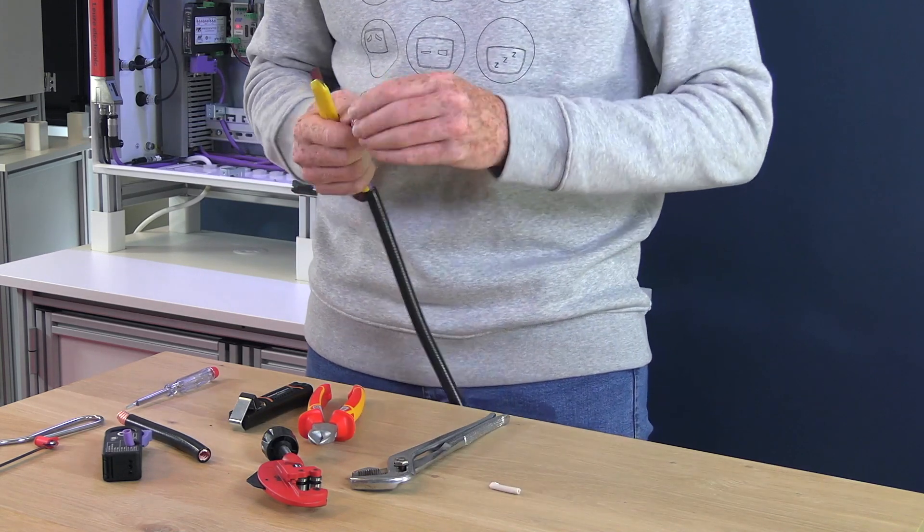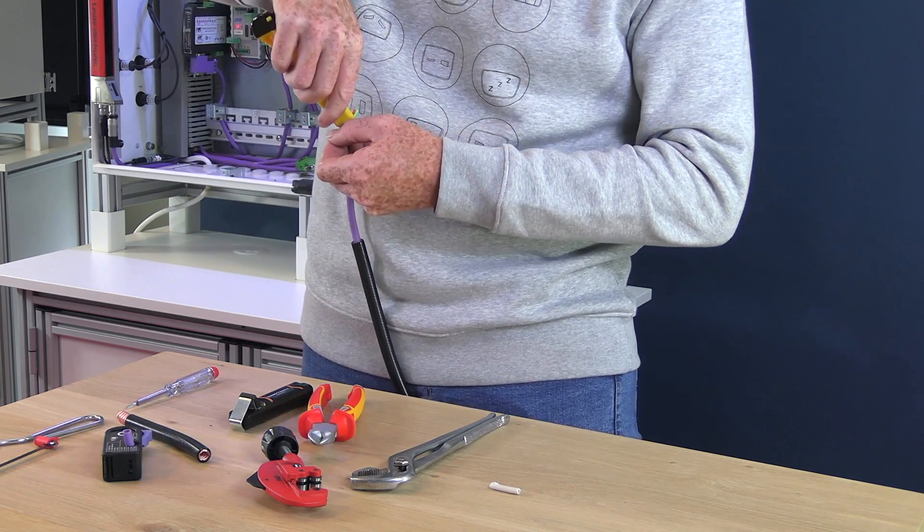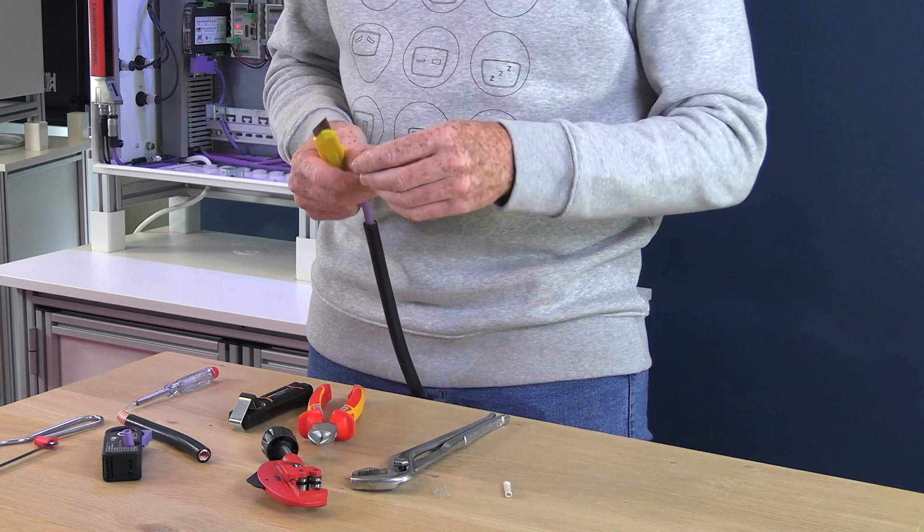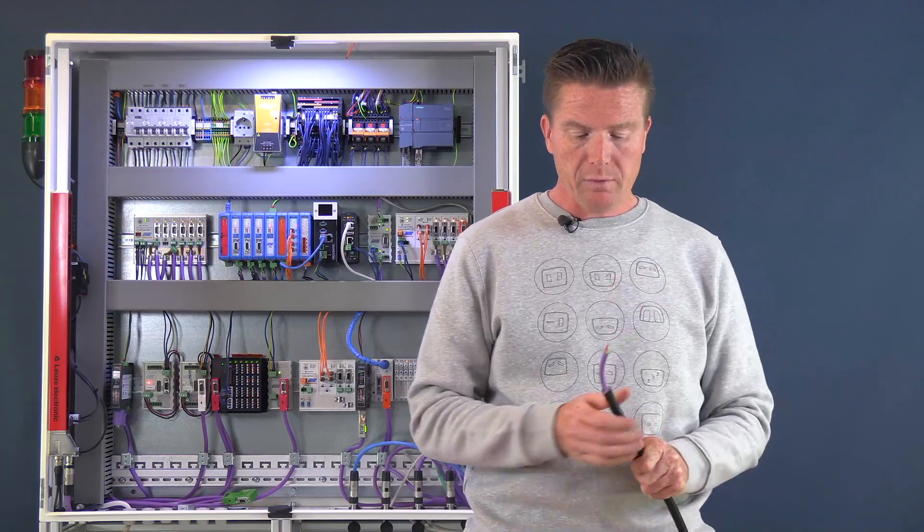Like that. And we can remove the plastic, the foil. The foil is still in there. Let's see. So now my Profibus cable is prepared.